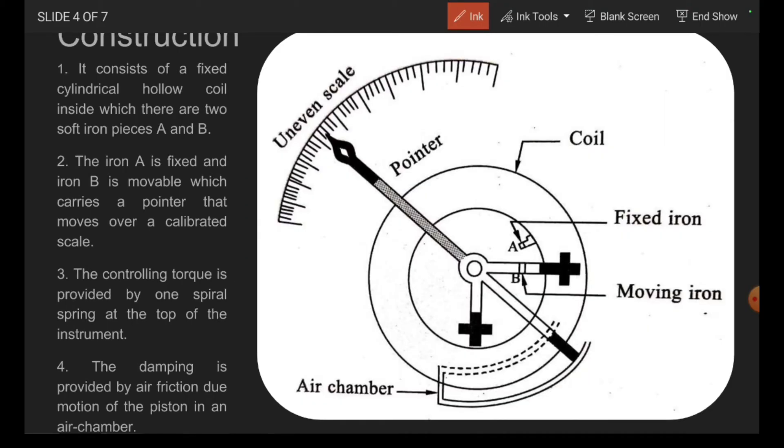Then coming to the construction, it consists of a fixed cylindrical hollow coil inside which there are two soft iron pieces, A and B. The iron A is fixed and the iron B is movable, which carries a pointer that moves over a calibrated scale. The controlling torque is provided by one spiral spring at the top of the instrument. The damping is provided by air friction damping due to the motion of the piston in the air chamber.